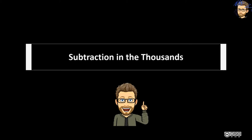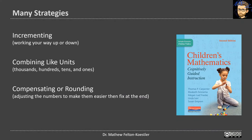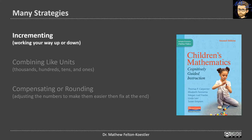A parent messaged me asking about different strategies for subtracting in the thousands, so here are some thoughts on that topic. There are three main strategies I'm going to talk about, and then at the end I'll spend a little bit of time talking about the standard algorithm. The three strategies are: incrementing, combining like units, and compensating or rounding.